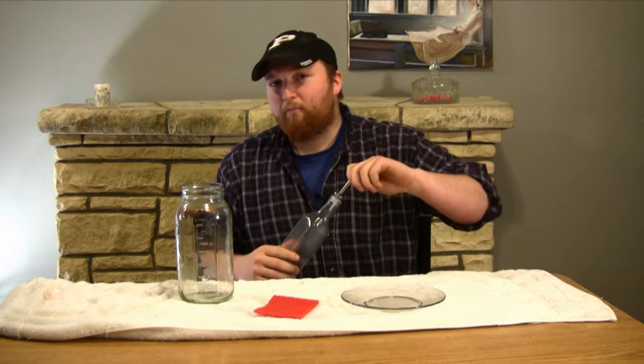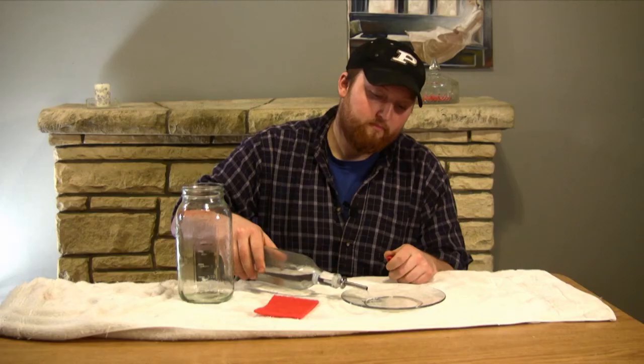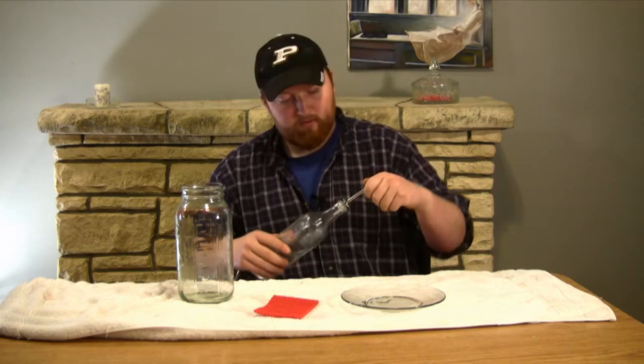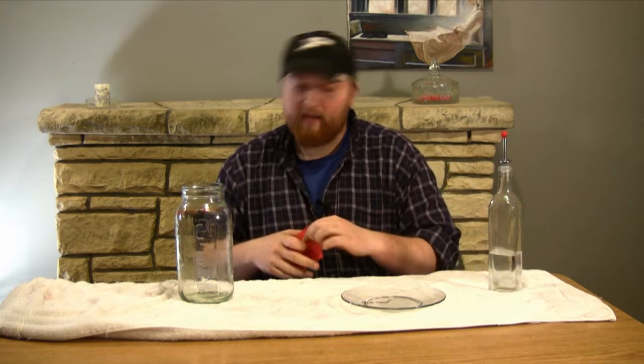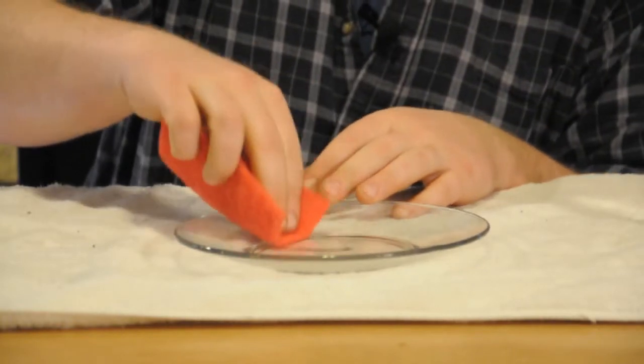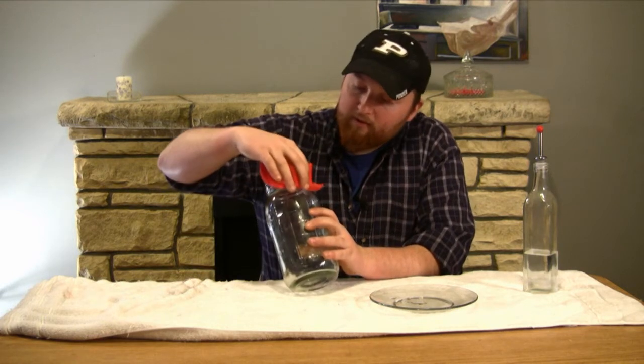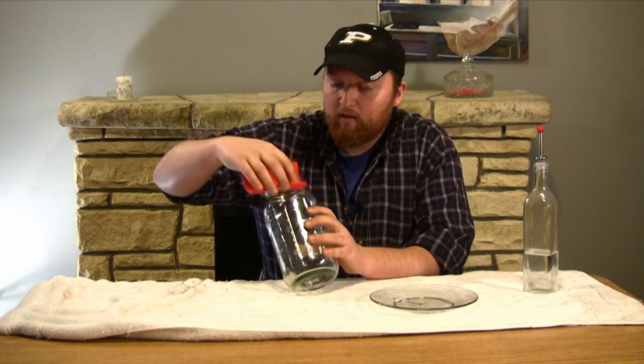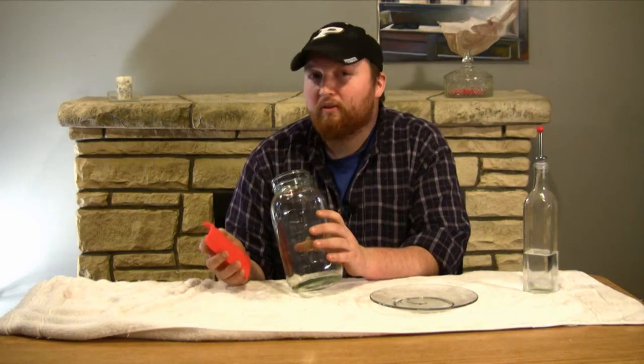Take your white vinegar and pour a little bit in the dish. Take your scratch pad and put a little bit of vinegar on there. Take your white vinegar and dab it onto the rust. Doing this will help remove a little bit of that elbow grease later on.